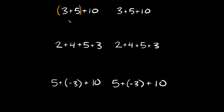Well, remember according to the order of operations, whatever is in parentheses is where you start — that's what you do first. So here we would do the 3 plus 5 first. So 3 plus 5 is equal to 8, and then we'll bring down this plus 10. So 8 plus 10 is equal to 18, and that'd be your answer here.